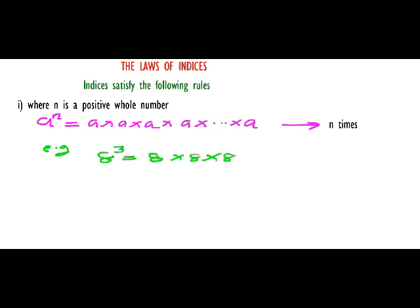For example, 8 raised to power 3 is 8 multiplied by itself 3 times. 6 raised to power 2 is 6 multiplied by itself twice. 6 raised to power 5 is 6 multiplied by itself 5 times.